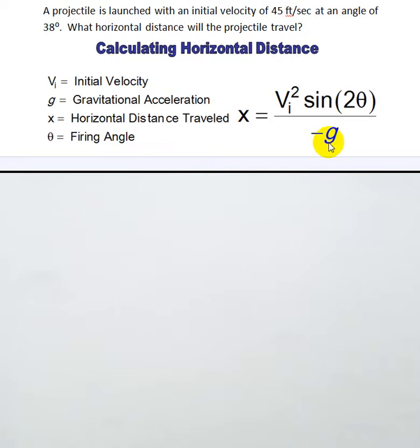For g in this example, there's an important piece of information: our initial velocity was 45 feet per second. This tells us we're in US customary measurement.